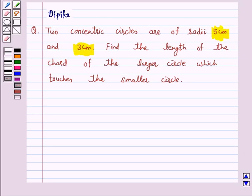Let's discuss a question which says two concentric circles are of radii 5 cm and 3 cm. Find the length of the chord of the larger circle which touches the smaller circle.